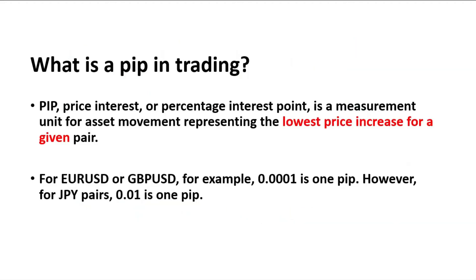What is a pip in trading? Pip, or price interest point, or percentage interest point, is a measurement unit for asset movement representing the lowest price increase for a given pair. When we create one move of one pip, it's a very small incremental change. For EURUSD, GBPUSD, or major forex pairs, 0.0001 is one pip.